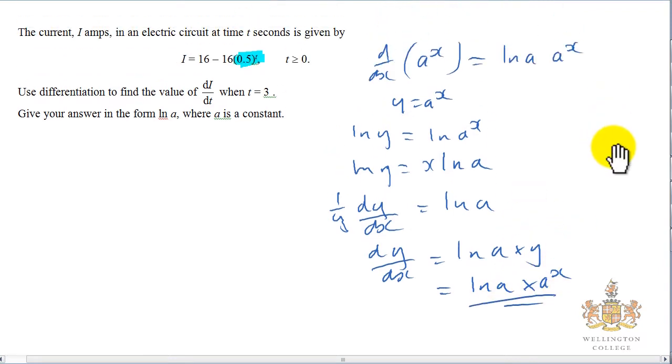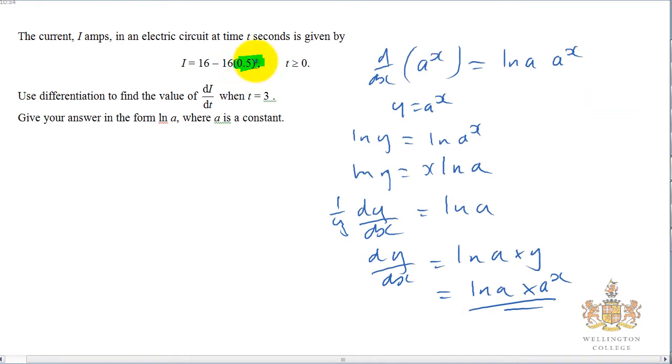We've got I's and t's here, so dI by dt, just imagine the x is t, the a is 0.5 now, and the I is like how y is here. So if we want to find dI by dt, 16 differentiates to give you nothing, the 0.5 to the t will give you natural log of 0.5 times by 0.5 to the t.